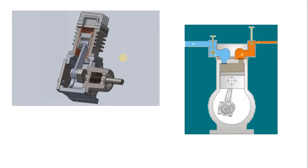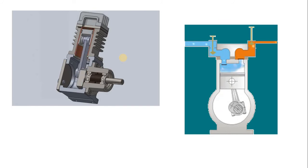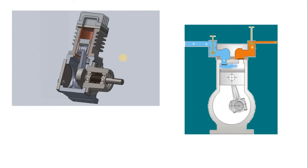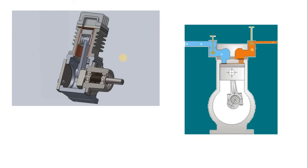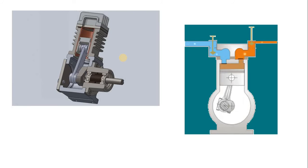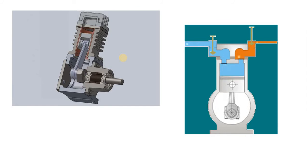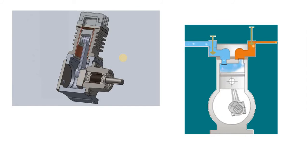This is the working animation or GIF of the single stage reciprocating air compressor. Here you get an idea about the movement of the piston from TDC to BDC and from BDC to TDC as far as the crank rotation is concerned.